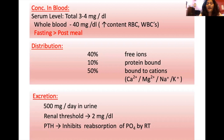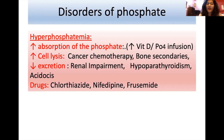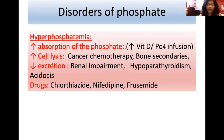Hyperphosphatemia — increased phosphate levels — is mostly due to increased absorption, such as excess vitamin D administration or increased phosphate infusion. Conditions causing cell lysis — cancer, chemotherapy, bone secondaries — also lead to hyperphosphatemia. Conditions reducing phosphate excretion, like renal impairment, hypoparathyroidism, and acidosis, further contribute. Prolonged administration of drugs like chlorothiazide, nifedipine, and furosemide can also cause hyperphosphatemia.